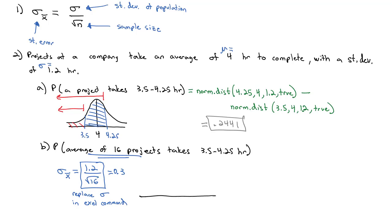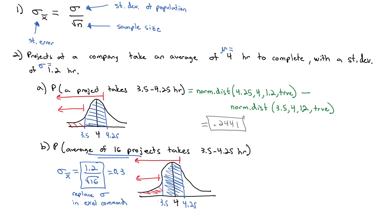If we draw a picture, we're still dealing with the same normal distribution with a mean of 4. We still want to be between 3.5 and 4.25. We still have to take the bigger one and subtract off the smaller one — that all remains the same. What changes is what we type in for the standard deviation part of the NORM.DIST command, because we have the average of 16 projects. We're using the central limit theorem, which says we have the same average but the standard deviation has shrunk to the standard error.